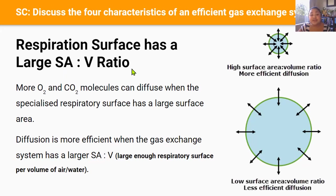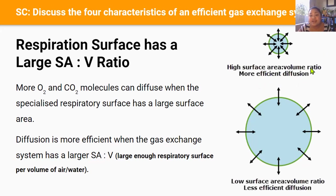Let's start with a large surface area to volume ratio. The rate of oxygen and carbon dioxide diffusion across any specialized respiratory surface depends on the amount of surface area available. If the respiratory surface has a larger surface area, there will be more sites for oxygen and carbon dioxide molecules to enter and exit. Diffusion is more efficient when the gas exchange system has a large or high surface area to volume ratio.